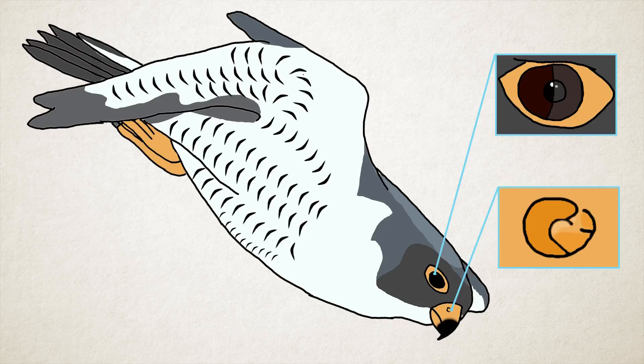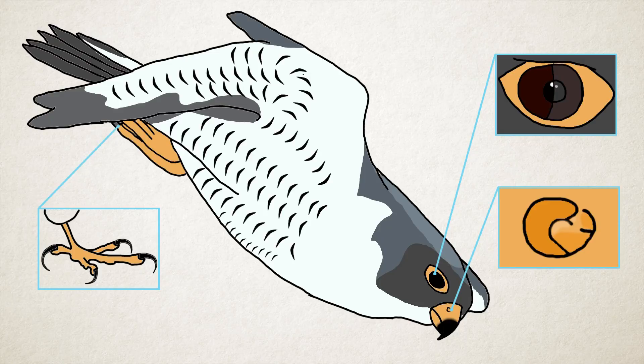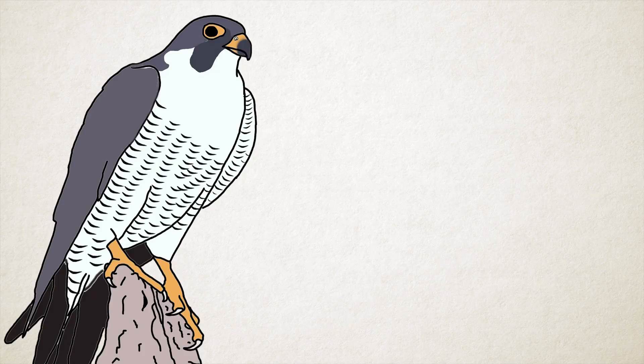When the Peregrine Falcon reaches the prey, it uses its talons for catching. And if the impact of being hit by a diving falcon doesn't kill the prey, then the big sharp beak will kill it instantly.